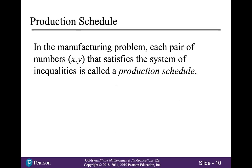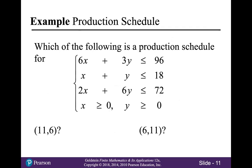Next we talk about the production schedule. In the manufacturing problem, each pair of numbers X comma Y that satisfies the system of inequalities is called a production schedule. In this example, we're going to look at which of the following two ordered pairs — (11, 6) and (6, 11) — is a production schedule for the set of constraints that we just developed.